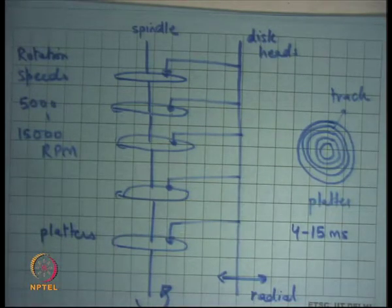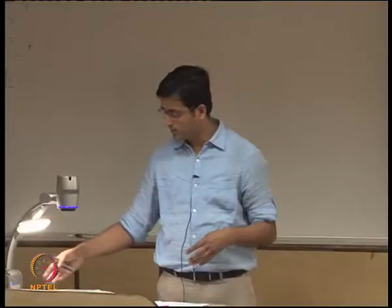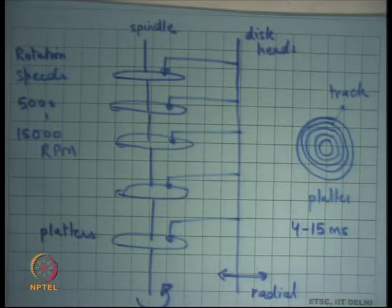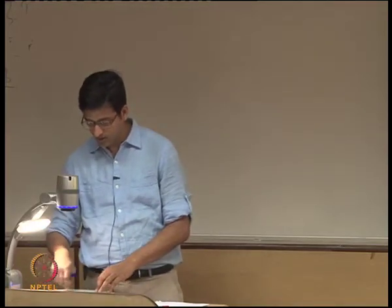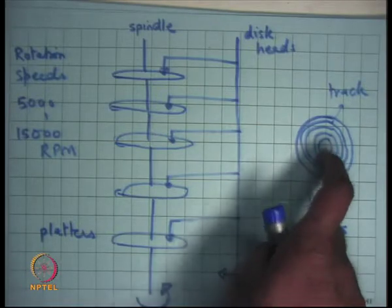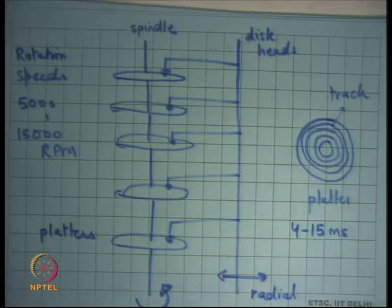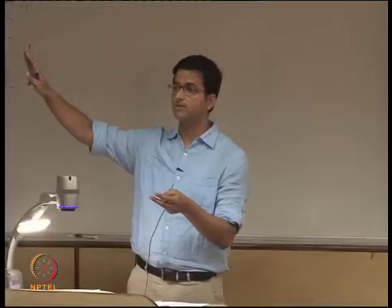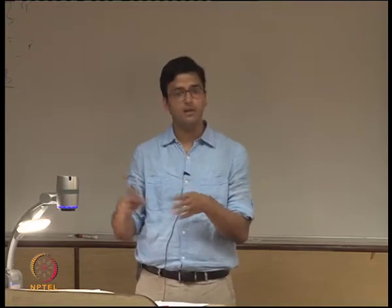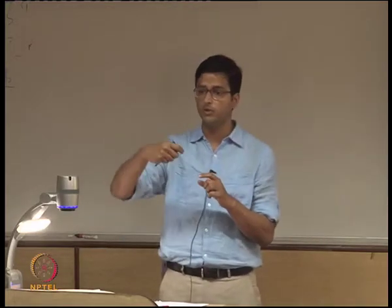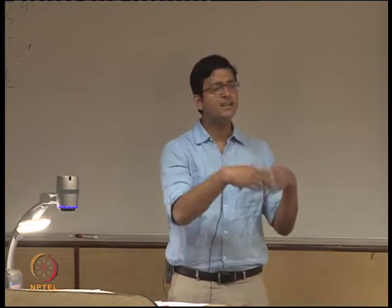When you make a request for disk block X, it figures out which platter, track, and offset X lives on. It first positions the disk head at that track — that's the seek time. Then, because the disk is rotating, it eventually reaches position X and starts reading data, which is buffered in the disk controller and eventually sent to the CPU.